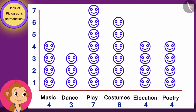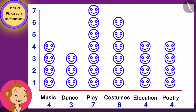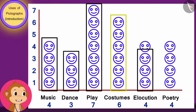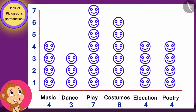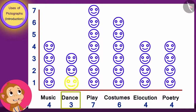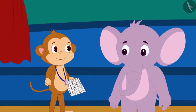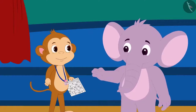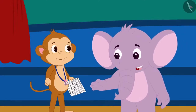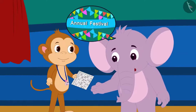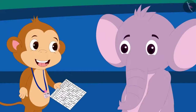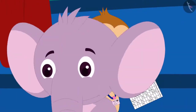Babban got very excited. He said to Appu, wow, this is so interesting! Just by seeing the height of these lines made by the faces, I can immediately find out which program has the maximum number of children and which program has the least number of children. Appu laughed and said, come, let's quickly make the preparations. There is only a little time left for the program to start. Babban thanked Appu and started his work.